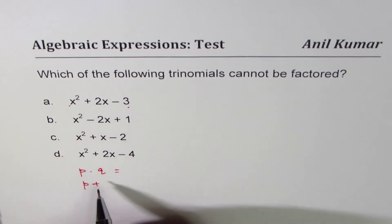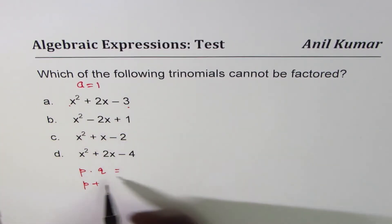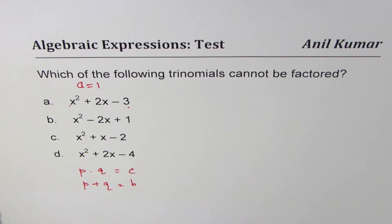We call these coefficients as AC. In this case A is equal to 1, so the product should be C and the sum should be B. That is the strategy for us.